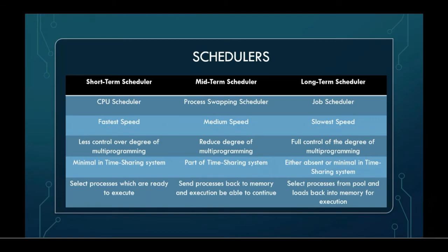For partitioning in a time-sharing system, short-term scheduler is minimal, mid-term is part of it, while long-term is either at-term or minimal. Short-term scheduler selects processes which are ready to execute. Mid-term scheduler sends processes back to memory to continue execution. Long-term scheduler selects processes from the pool and loads them back into memory for execution.